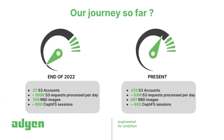Here are some simple facts to show how things are going. At the end of 2022, we started with only 27 S3 accounts. Right now we have around 115 S3 accounts. We started processing only around 10,000 S3 requests per day; now we are talking about 53 million S3 requests per day — even more on some days. We started from 100 RBD images mainly for office and infra; now we're talking about almost 1,000 RBD images. For CephFS, we started with 600 and are now at 400, because we are trying to move away from CephFS in favor of RBD and S3. That number will likely decrease further in the future.